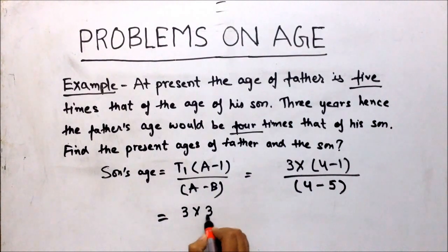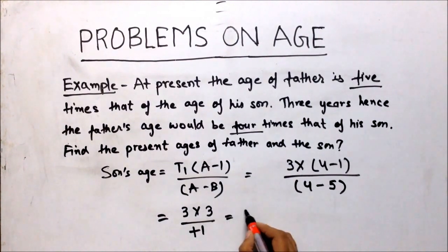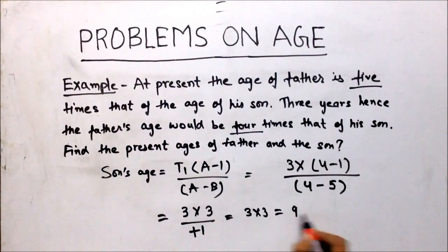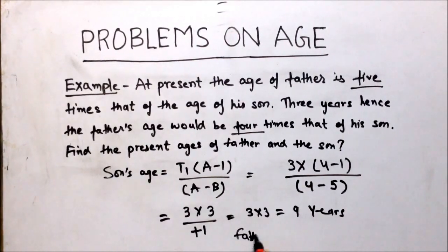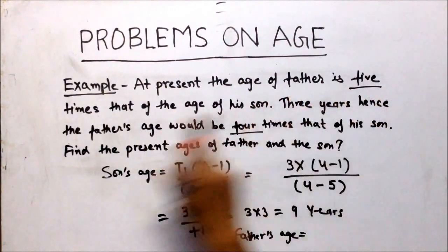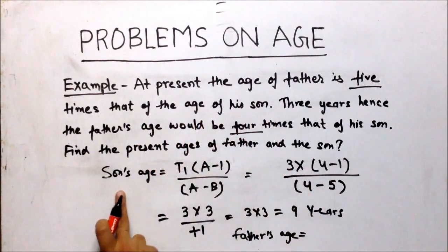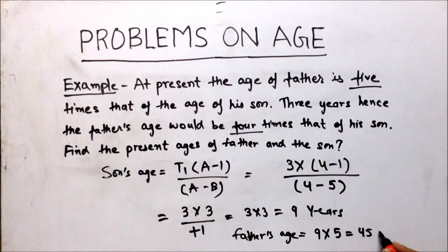We get 3 into (4 minus 1) upon (4 minus 5), which gives 3 into 3 upon minus 1. Since age cannot be negative, we consider it as positive. So 3 into 3 equals 9 years — the son's age is 9 years. In the question, the father's age is 5 times his son's, so 9 into 5 is 45 years. The present age of the son is 9 years and the father is 45 years.